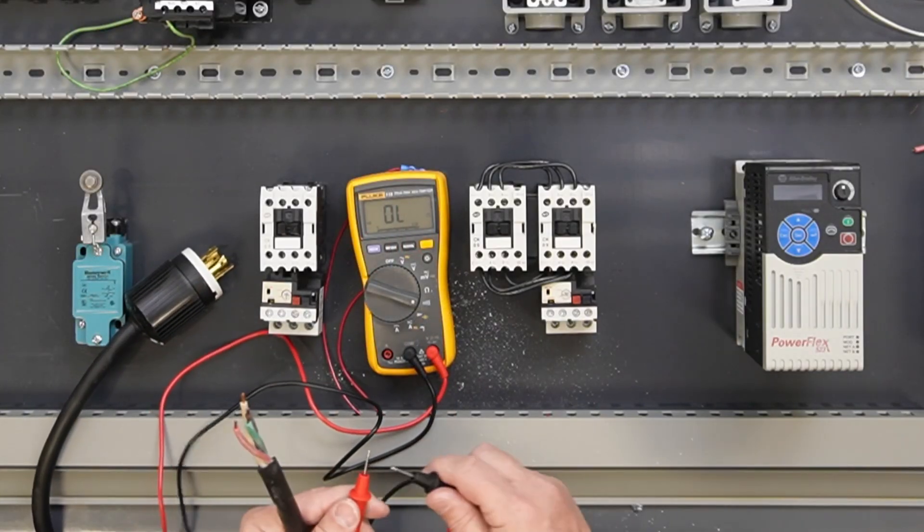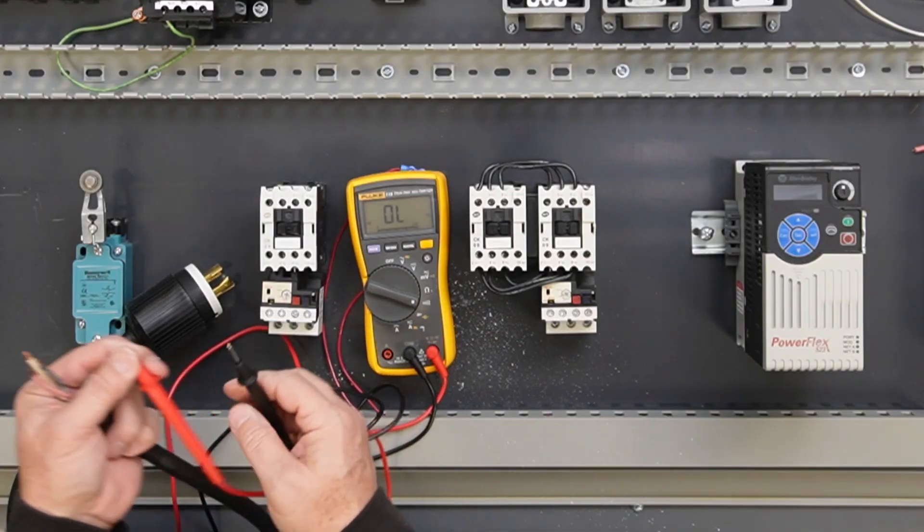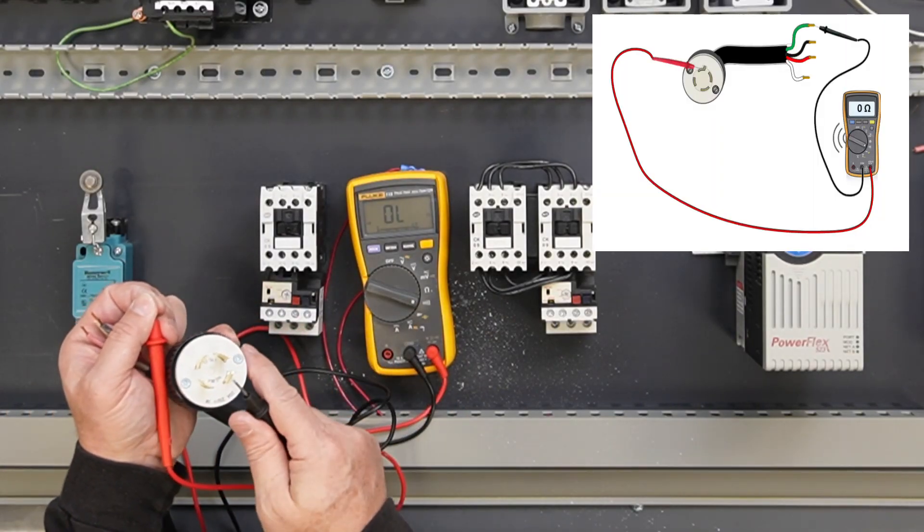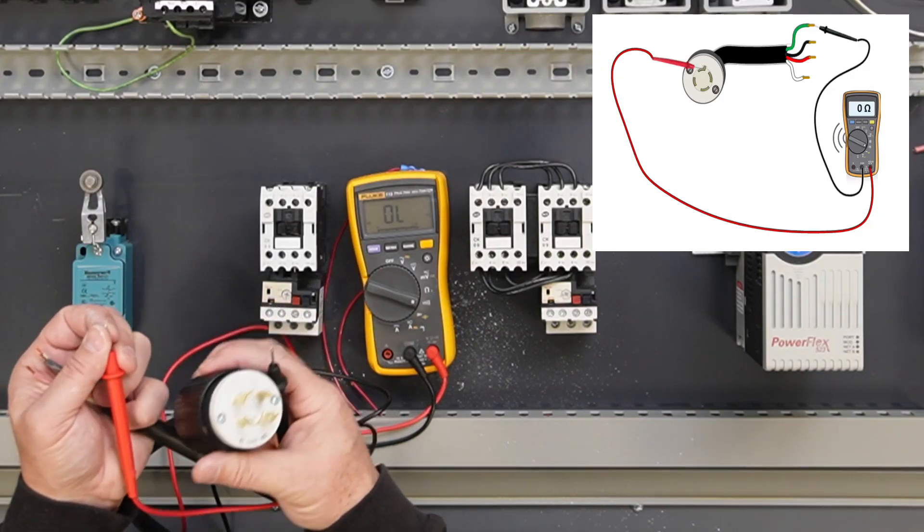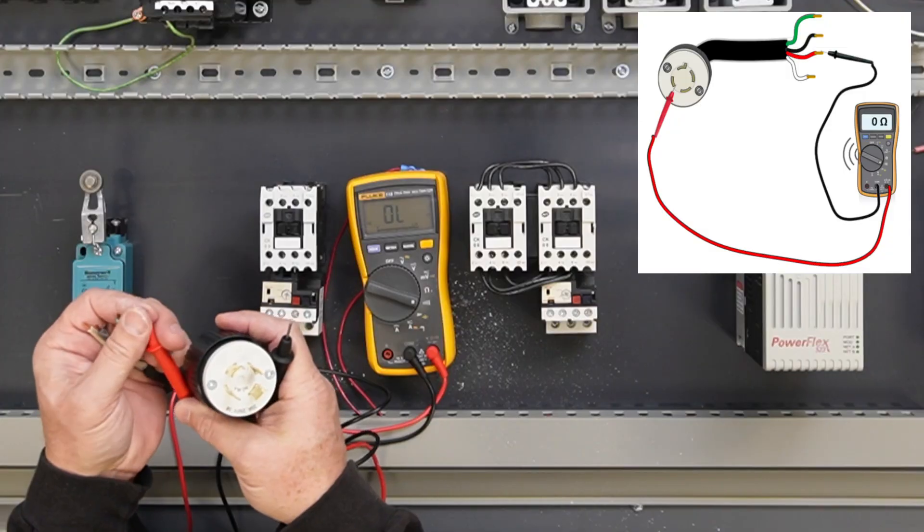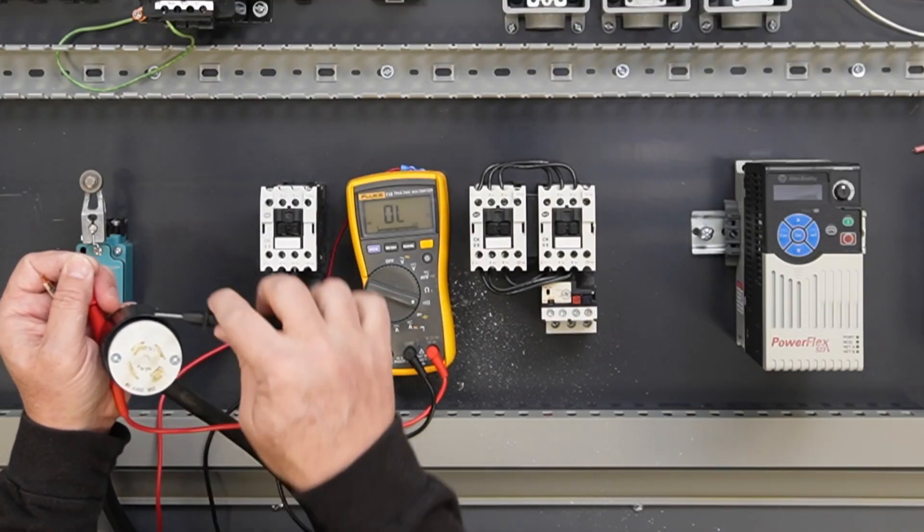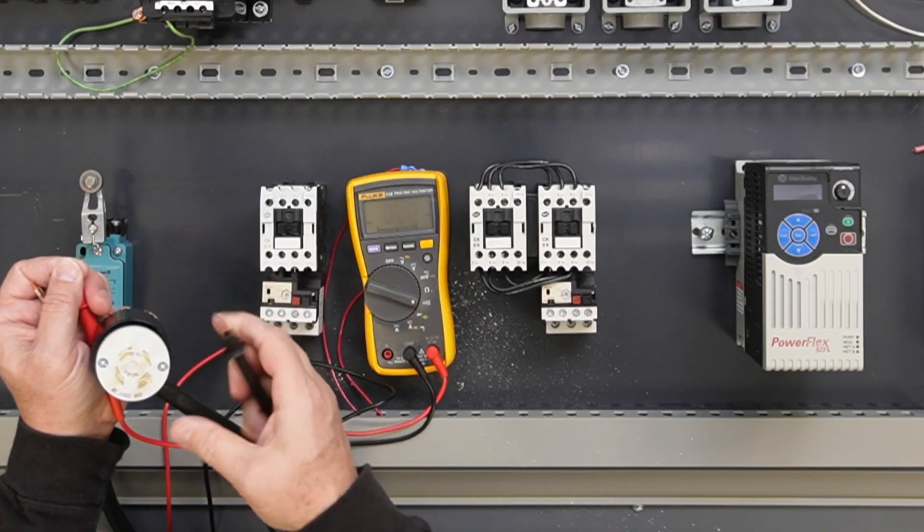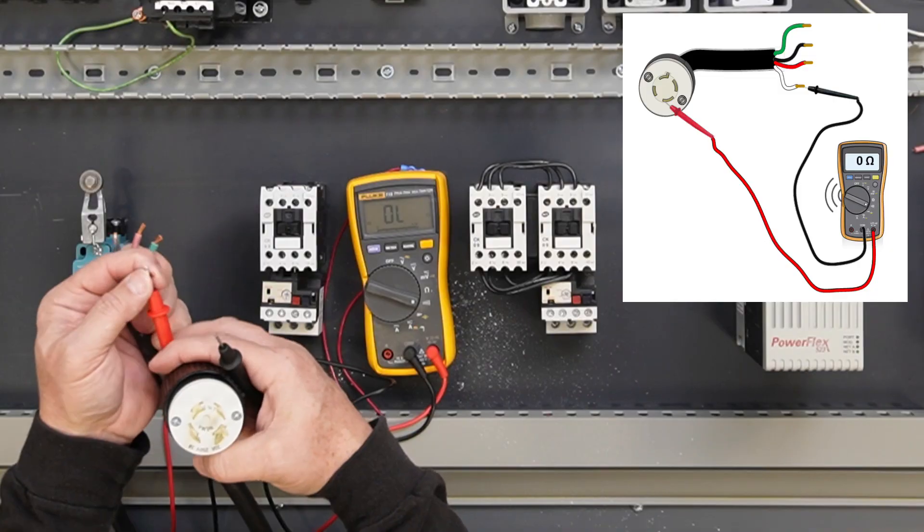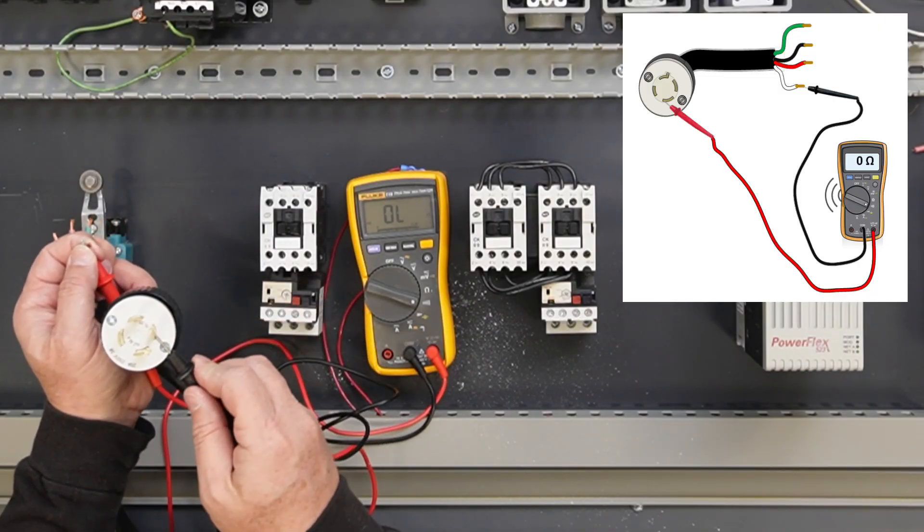Using a digital multimeter set to continuity, we will now test the cord. Isolate each wire and test for continuity from the wire to the appropriate prong on the plug. The DMM will emit a tone if continuity exists. Test to each prong to verify that there is only continuity between one wire and one prong.